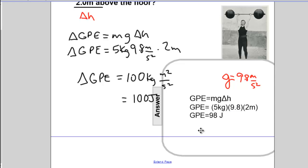If you lift it up, you did 98 joules of work on this barbell. If it falls, gravity will do 98 joules of work as it falls to the ground.